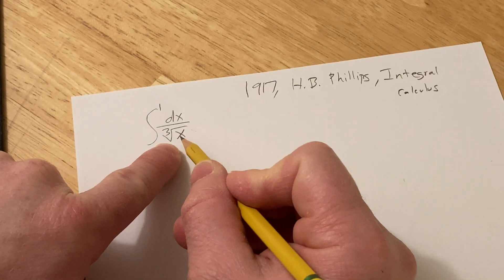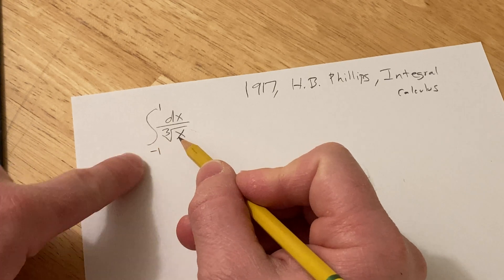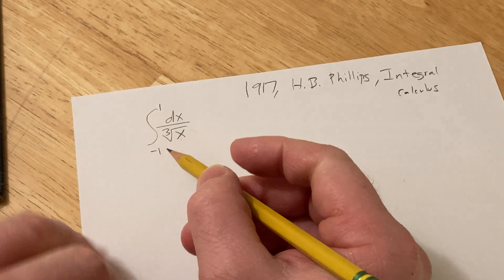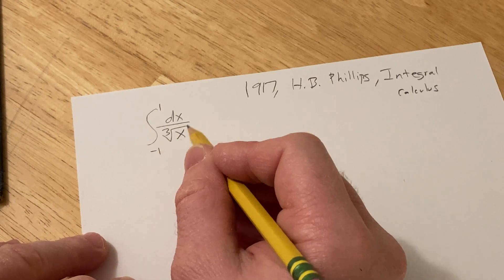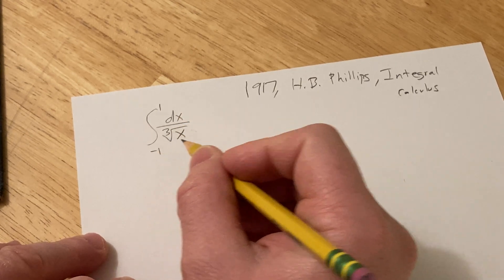This is undefined at zero, there's a discontinuity, and zero is between negative one and one. So the first thing we have to do is break this up at that point of discontinuity into two integrals.